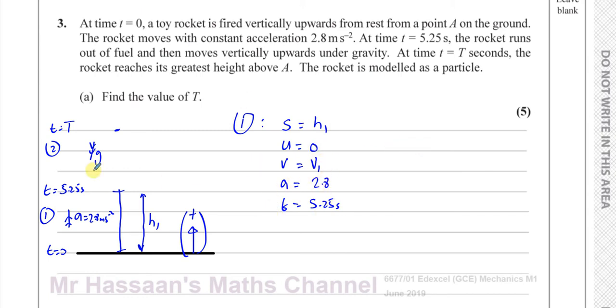However, we need information from here to help us find the solution to part two. One of the things I need to know is V1 because V1 is the same as U2. The initial velocity of stage 2 is the same as the final velocity of stage 1. When it reaches this particular height, it got to that velocity and then it runs out of fuel. So we need to find what that V1 is, the velocity when it reaches this point.